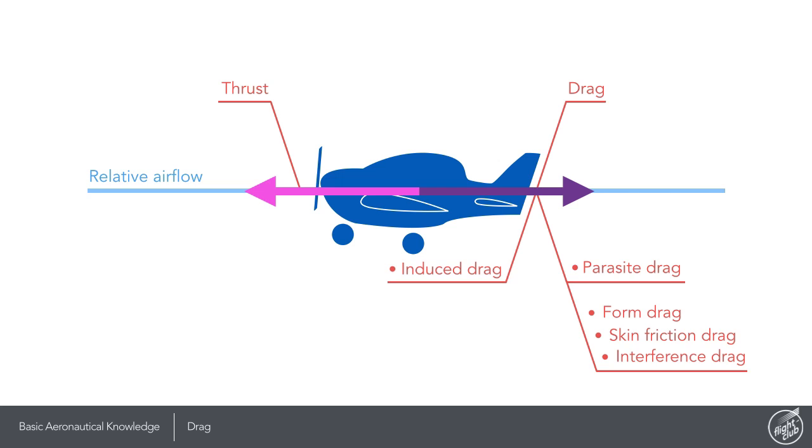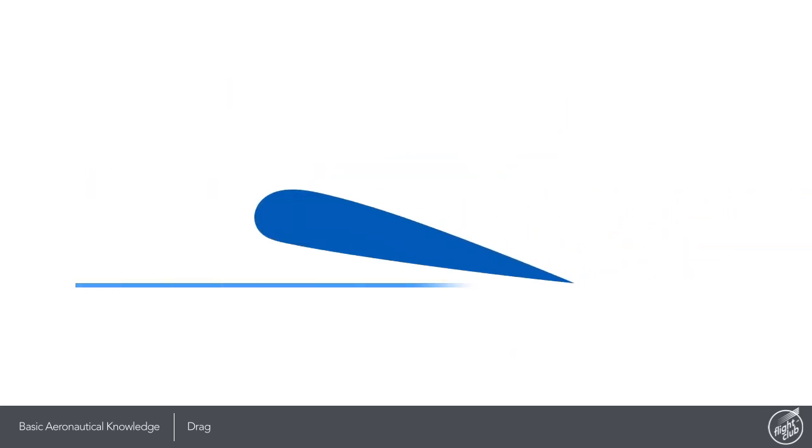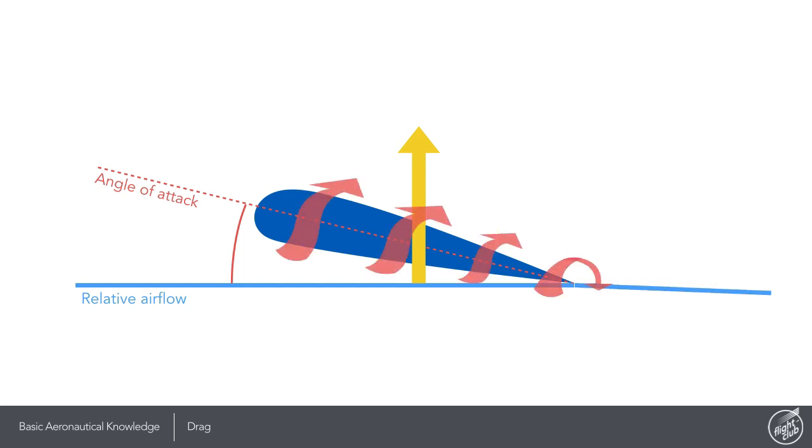Let's have a look at induced drag. At high angles of attack the high pressure air below the wing likes to swirl around the wing tip towards the low pressure air above the wing. A twisting vortex of air forms behind the wing deflecting the airflow downwards. An inclined local airflow is created which is the average of relative airflow and the deflected airflow resulting in the lift vector tilting backwards and contributing to total drag.